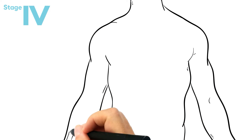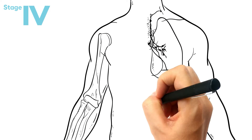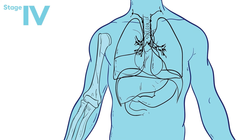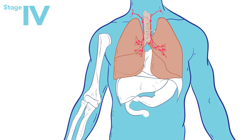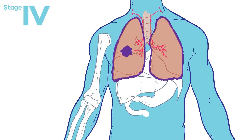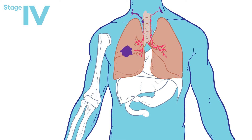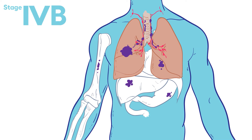Stage four non-small cell lung cancer. The cancer is advanced and has spread to the lining or fluid around the heart or lungs, or has spread to distant parts of the body. Having tumors in both lungs, no matter the size of the tumors, is stage four lung cancer. It is divided into substages 4a and 4b based on the number of tumors and exactly where the cancer has spread.